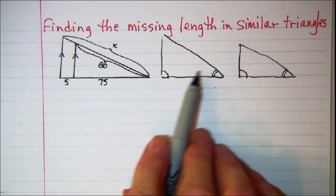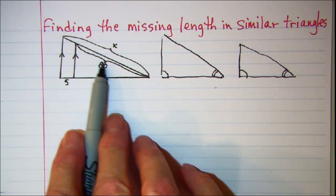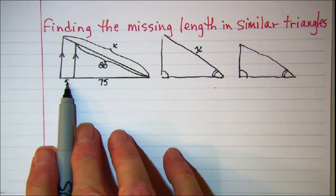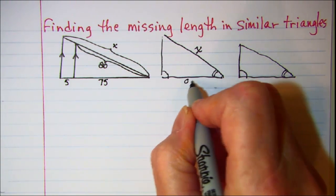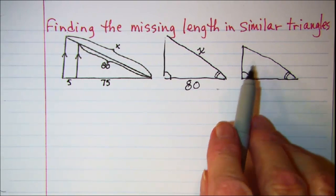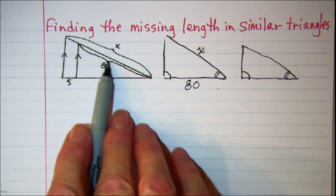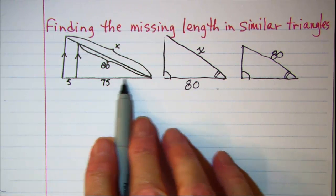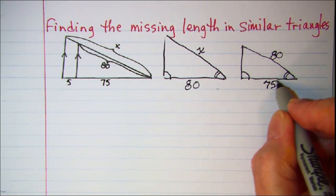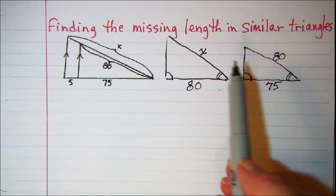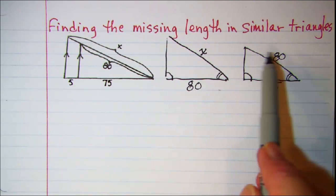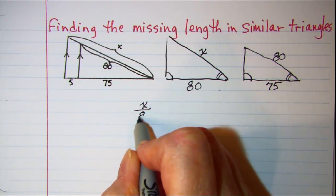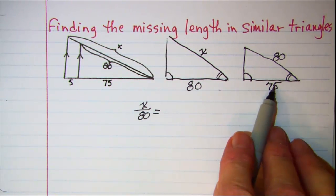The big triangle has this side as x and the base is 5 plus 75, which is 80. On the smaller triangle, this side is 80 and the base of the smaller one is 75. So we can set up a proportion: x is to 80 as 80 is to 75.